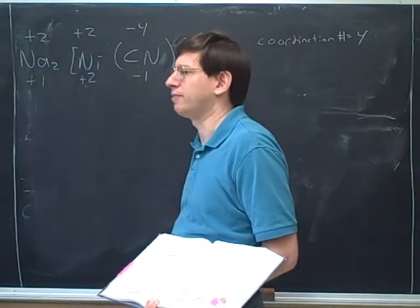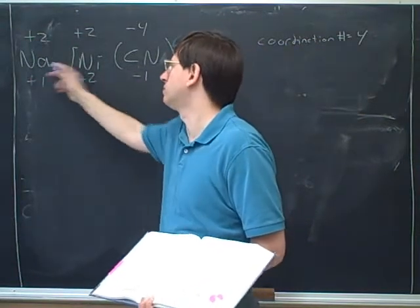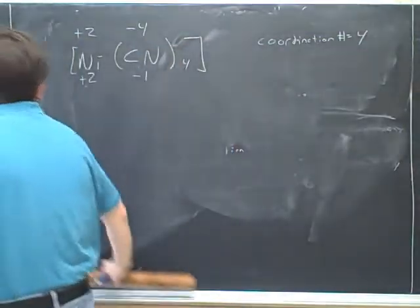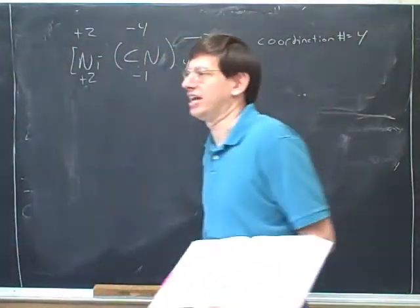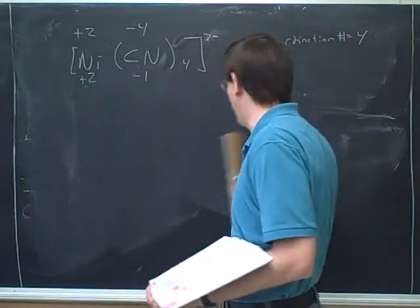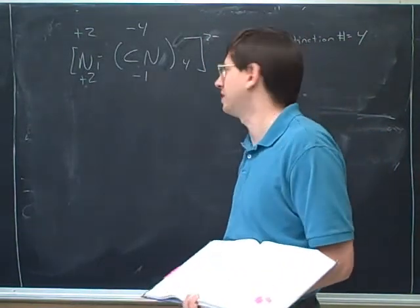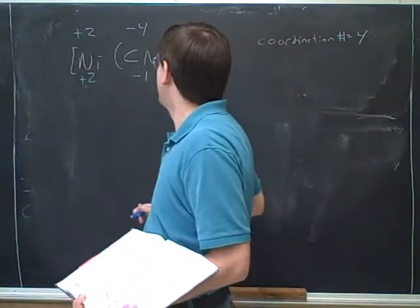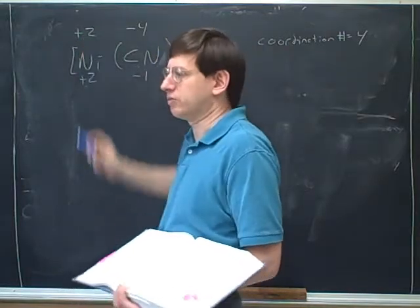So there's two different types of oxidation number problems you might get. Some where you're given the full neutral coordination compound, and some where you're only given the complex ion. And we're also learning here that complex ions can be either cations or anions. The previous examples we did were cations, but this is an anion. So the coordination number for the nickel here was 4, but it has an oxidation number of positive 2.